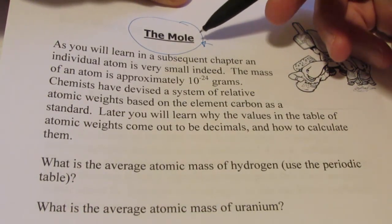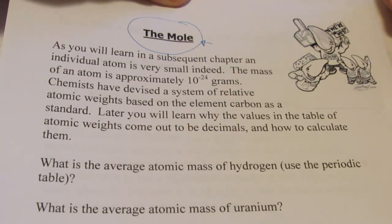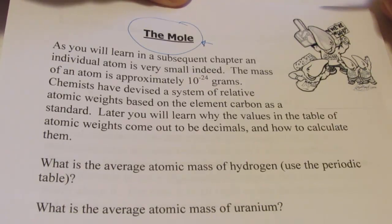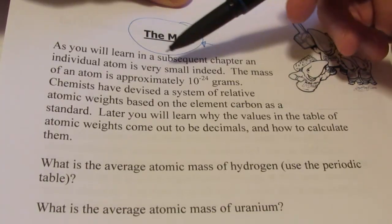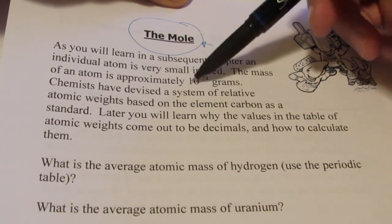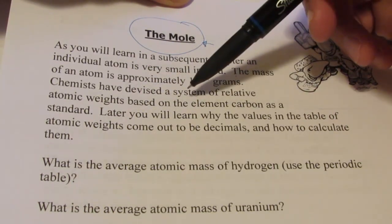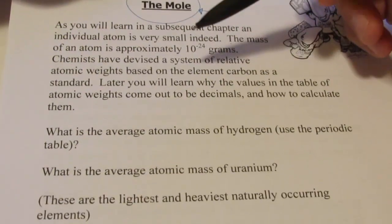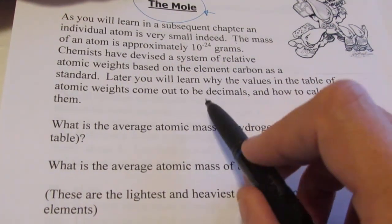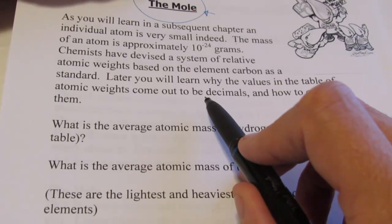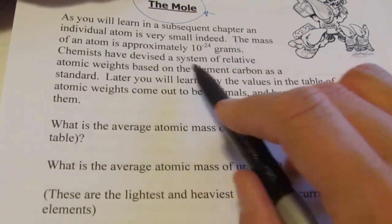It's important that you understand what a mole is. It's not a cute little brown furry creature that burrows underground. As you will learn, an individual atom is very small — the mass of an atom is 10 to the negative 24th of a gram. Chemists have devised a system of relative atomic weights based on carbon as a standard. We've already talked about average atomic mass and how to calculate it, and this will lead us up into the mole concept.